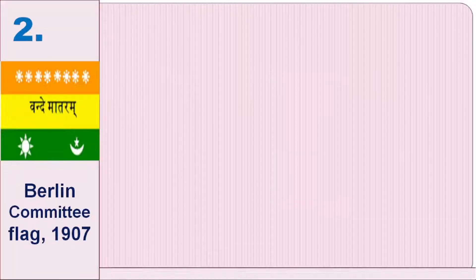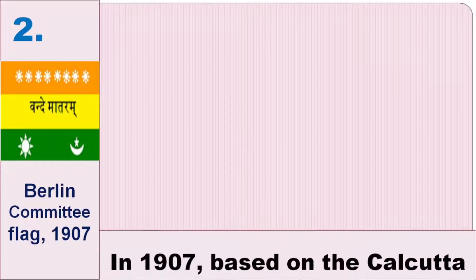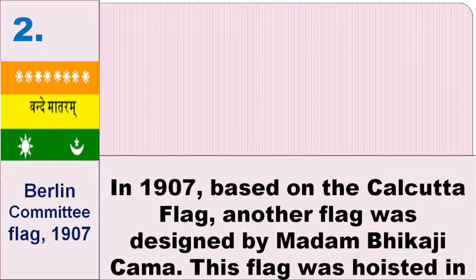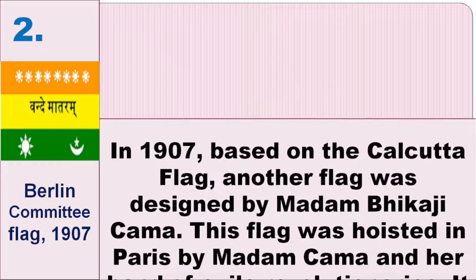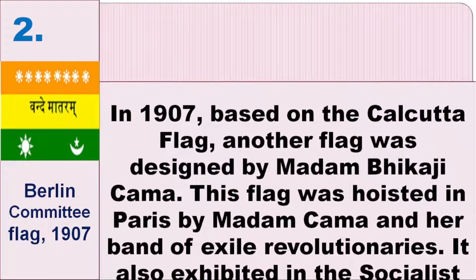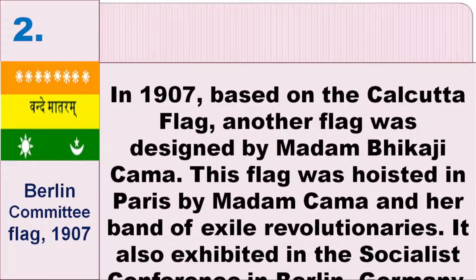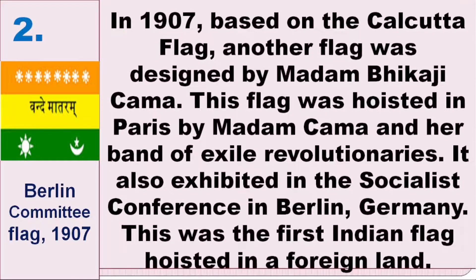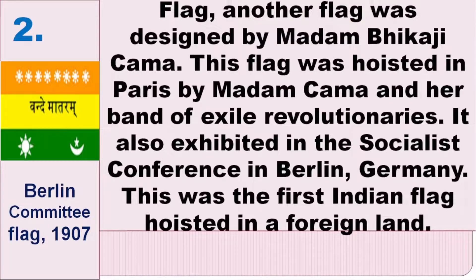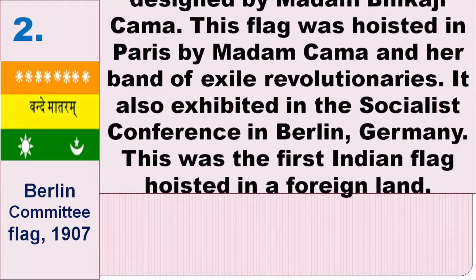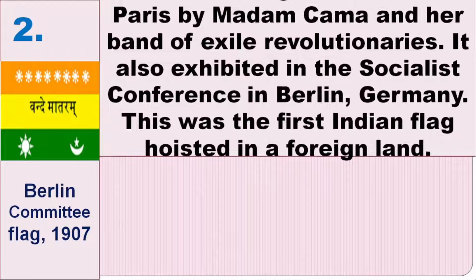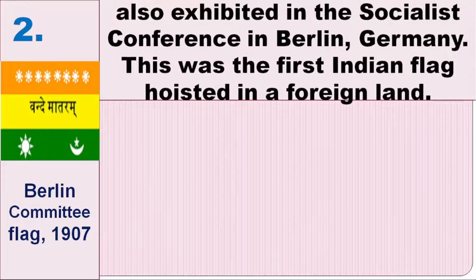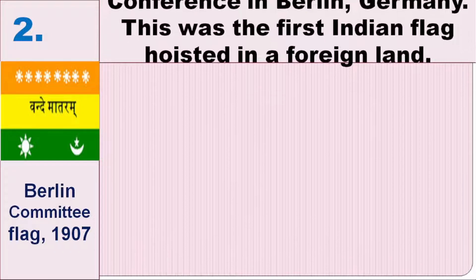In the second phase, in 1907, based on the Kolkata flag, another flag was designed by Madame Vikasi Cama. This flag was hoisted in Paris by Madame Cama and her band of exiled revolutionaries. It was also exhibited at the socialist conference in Berlin, Germany. This was the first Indian flag hoisted in a foreign land.